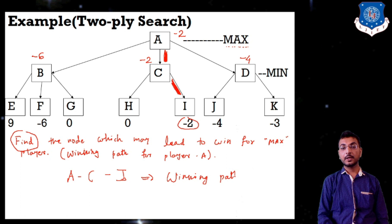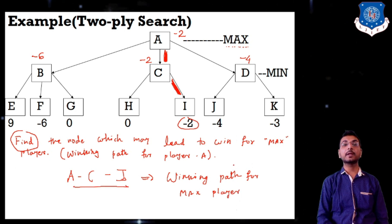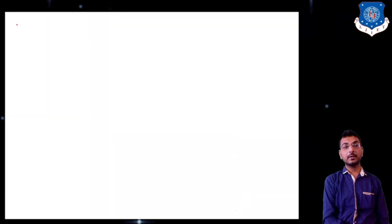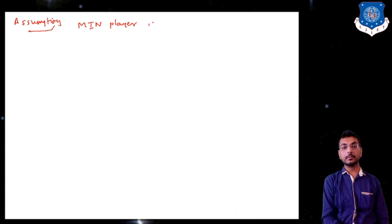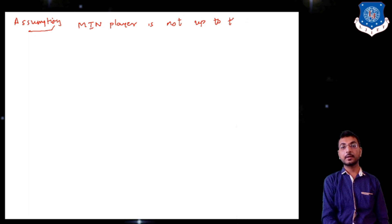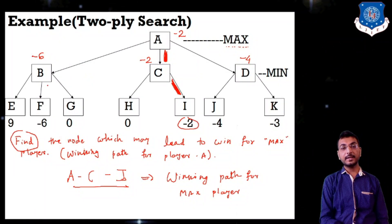This is the winning path for the maximum player. Now let's consider an assumption: what if the minimum player is not up to the mark, meaning they are not playing properly?